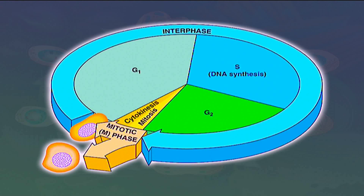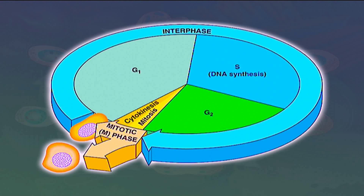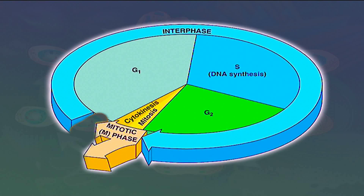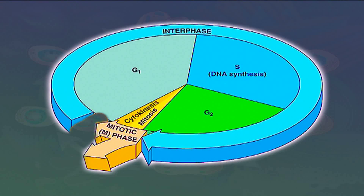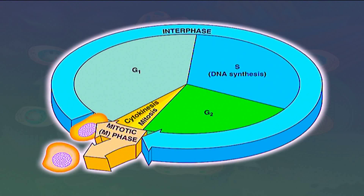During G2, a cell contains two times the amount of DNA present in the original diploid cell. Following mitosis, the daughter cells again enter the G1 period and have a DNA content equivalent to a diploid cell.